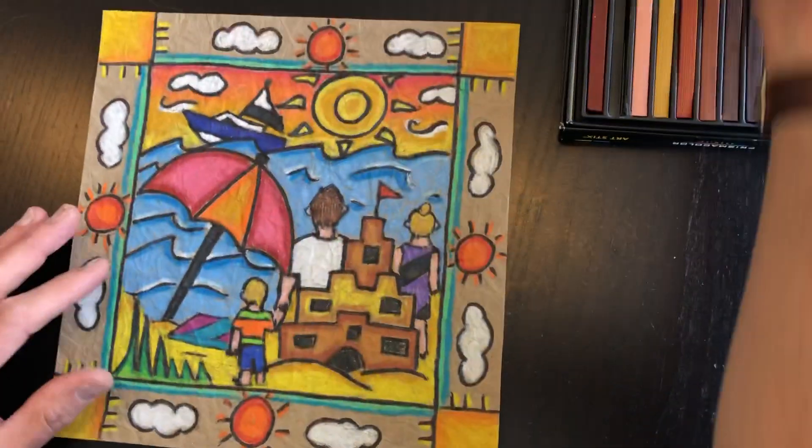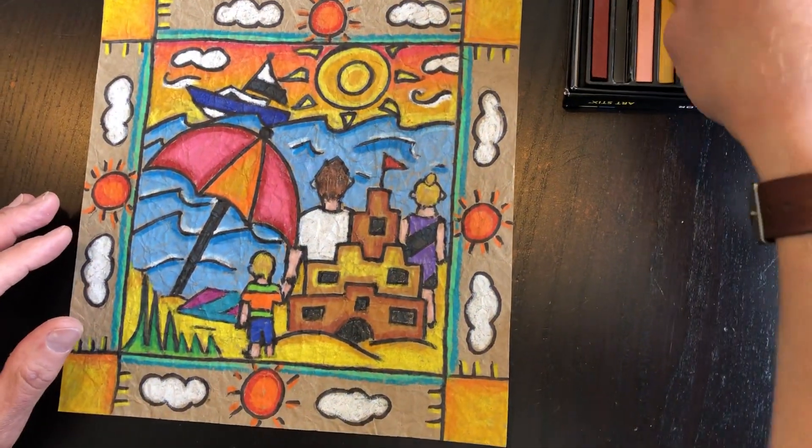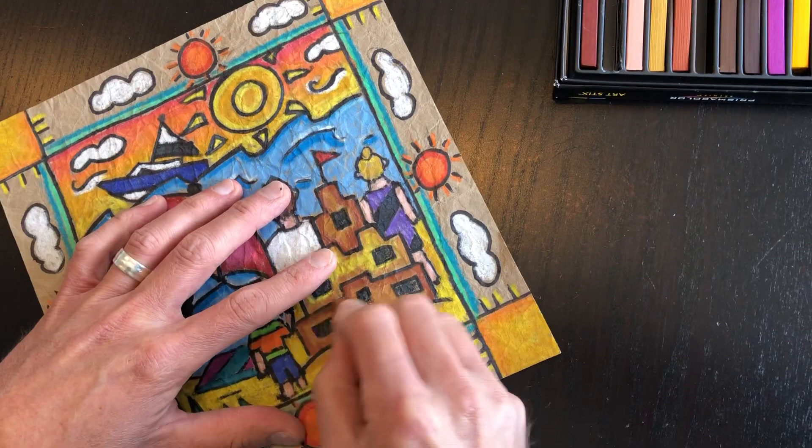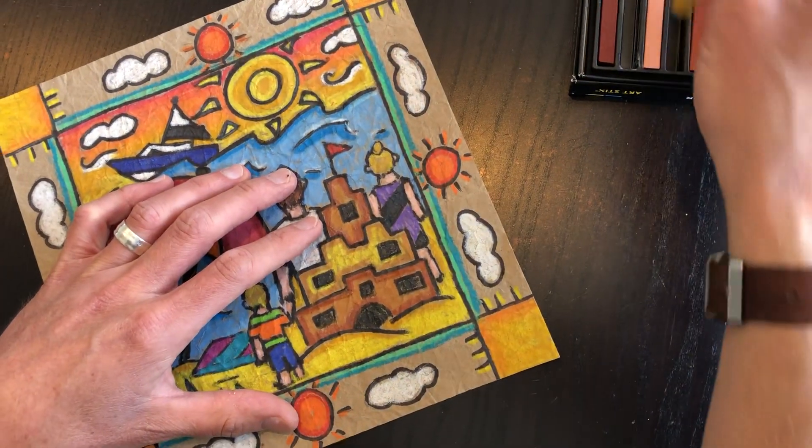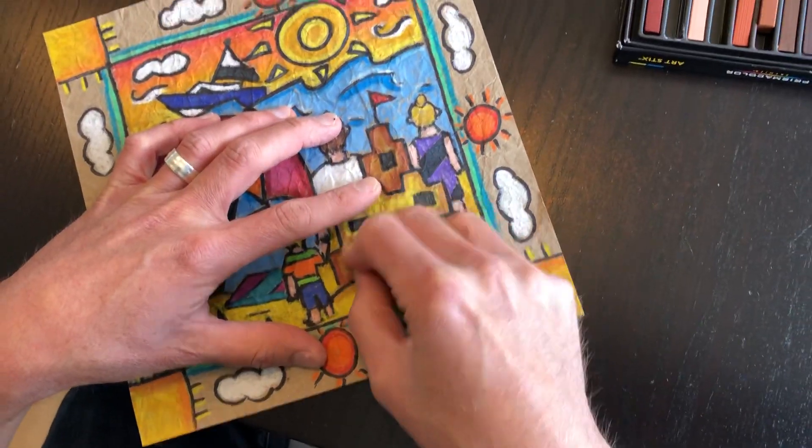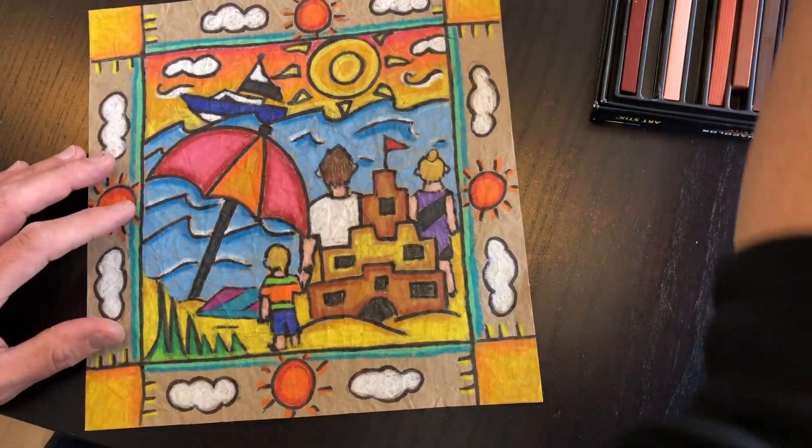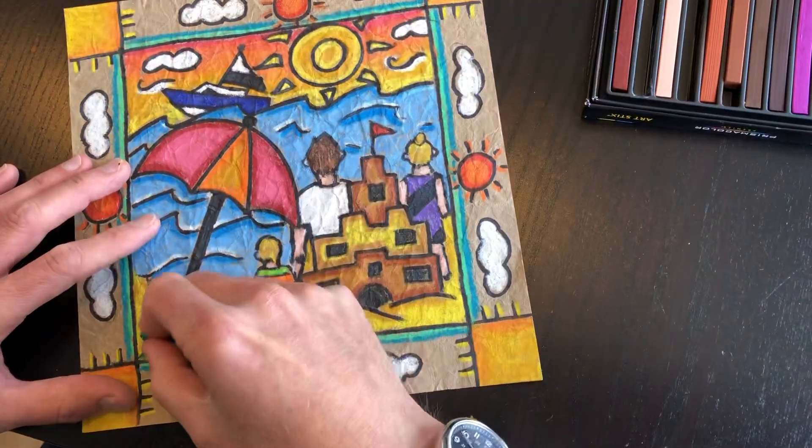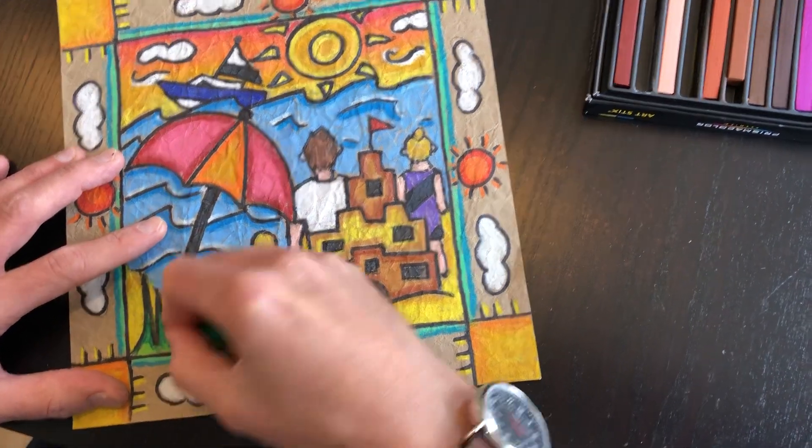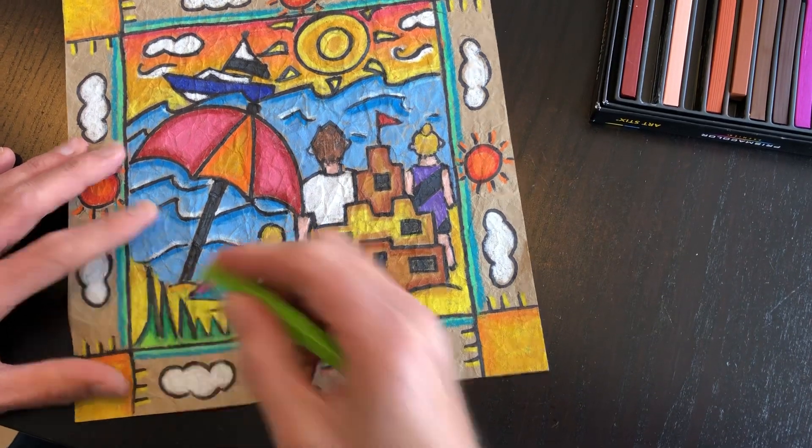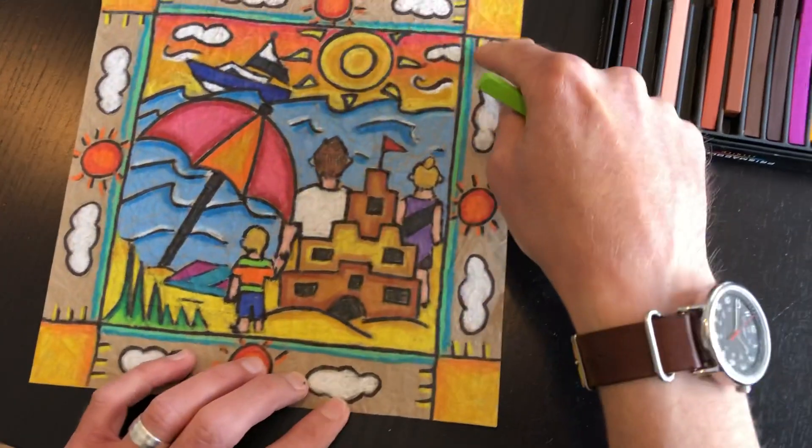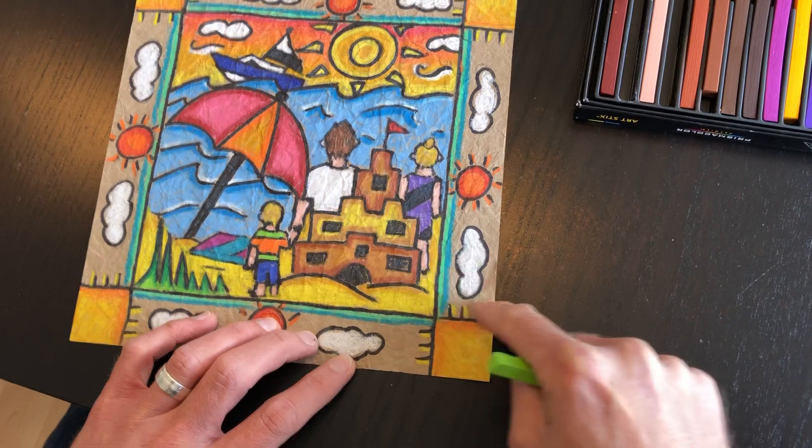This one here, you can see that I used a brown to do those edges and then filled it in with a lighter brown. Or with this green, I did a darker green here and then I did a lighter green on the inside.